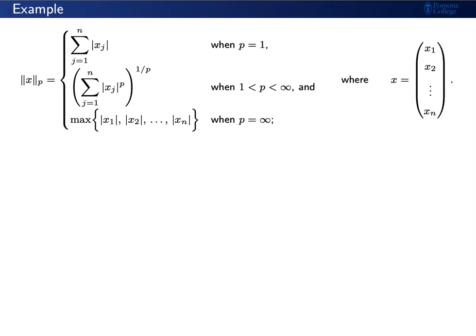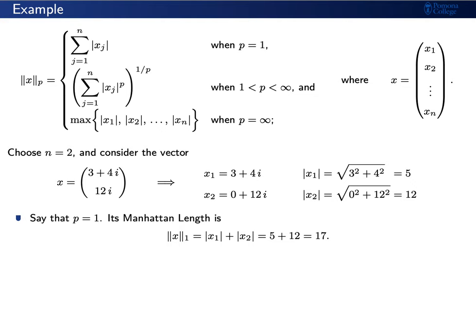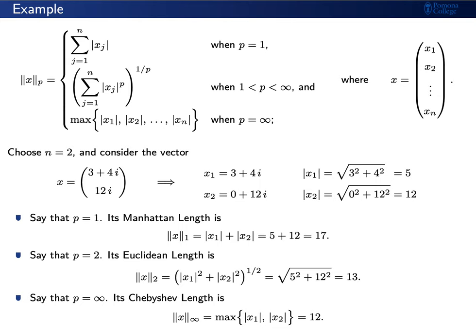Let's give an example. Let n equal 2, and consider the vector x with components x sub 1 equals 3 plus 4i and x sub 2 equals 12i. The absolute values of these components are 5 and 12, respectively. When p equals 1, the Manhattan length is simply 5 plus 12 equals 17. When p equals 2, the Euclidean length is the square root of 5 squared plus 12 squared, which equals 13. When p equals infinity, the Chebyshev length is the maximum of 5 and 12, which is 12.